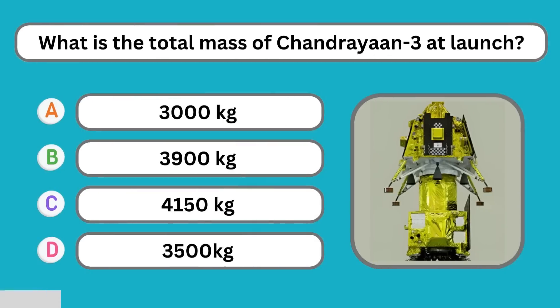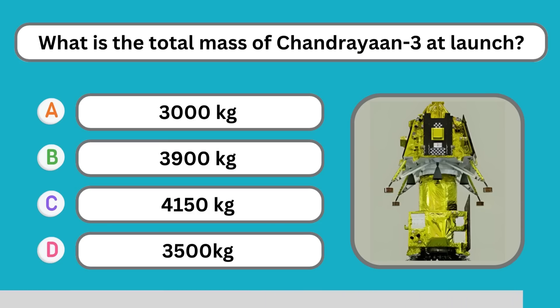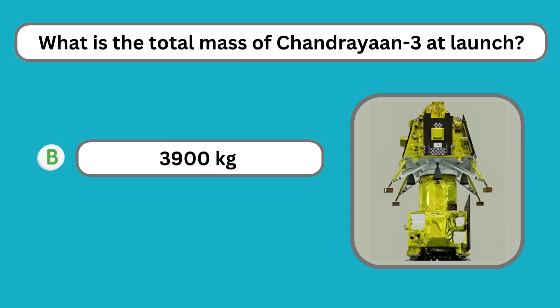What is the total mass of Chandrayaan-3 at launch? 3,900 kg.